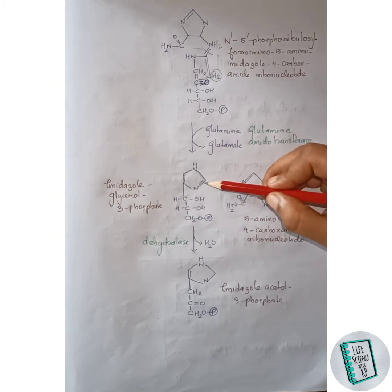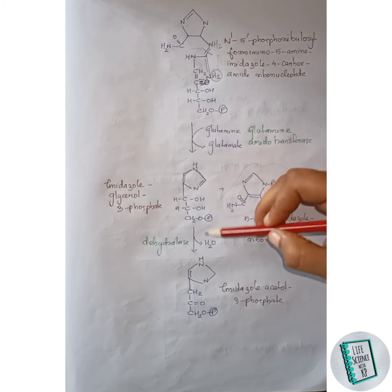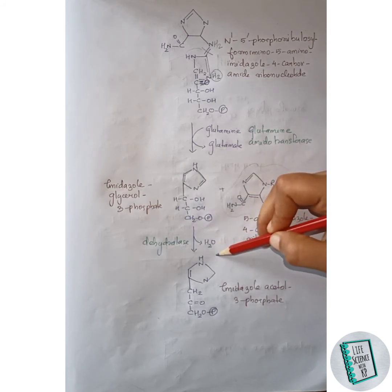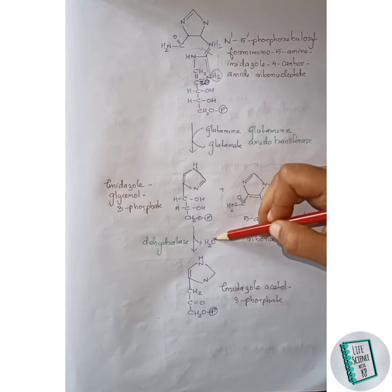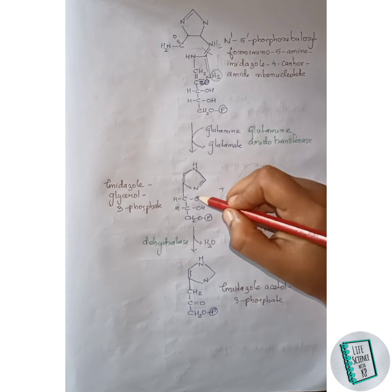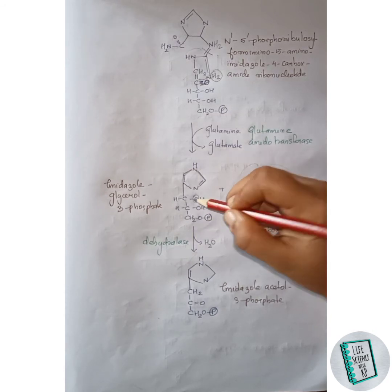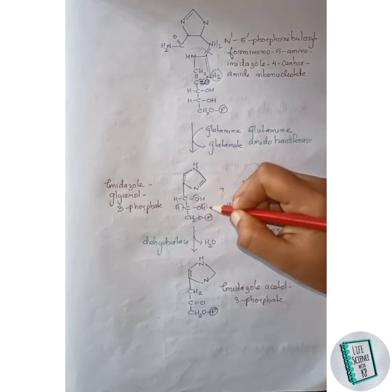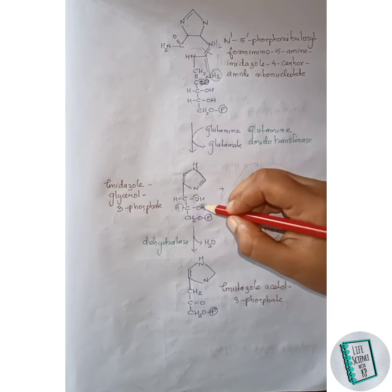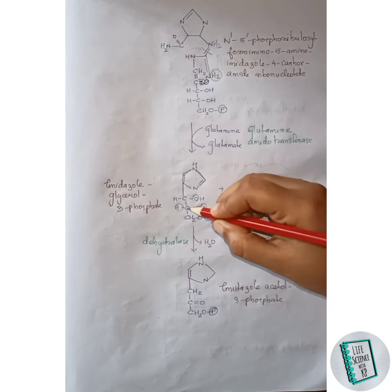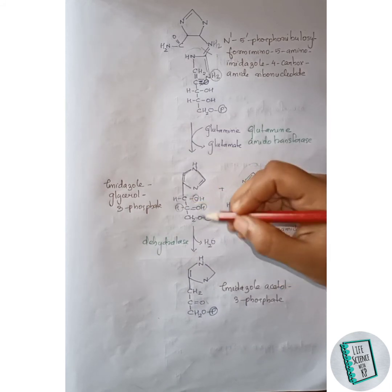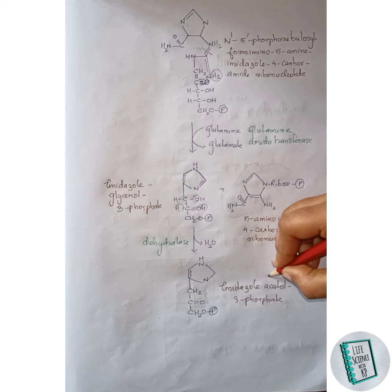Imidazole glycerol 3-phosphate then undergoes dehydration to form imidazole acetol 3-phosphate. Here, the oxygen from a carbon atom and two hydrogens from another carbon are removed as a water molecule, resulting in a double bond between the carbon and oxygen. The two hydrogens join to form CH2, and imidazole acetol 3-phosphate is formed.